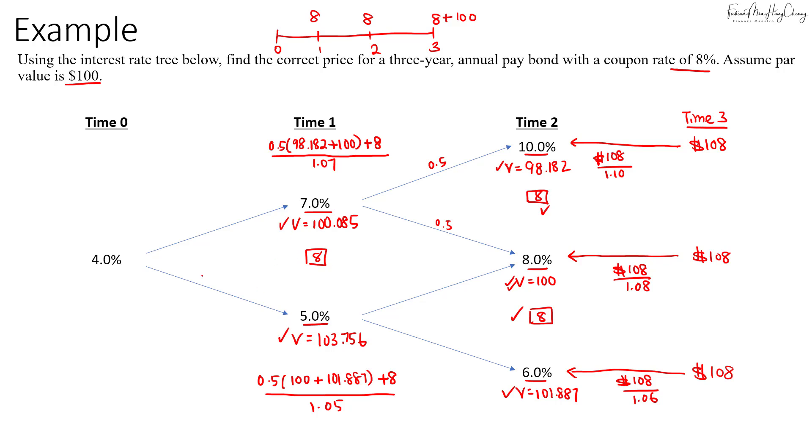And then lastly, we'll discount these two values back to the first period, time 0, where the discount rate is 4%. So the value at time 0 will be based on 0.5 times the sum of the two values, 100.085 plus 103.756, and then we plus the coupon, $8. Then we discount it at 4%, so that will give us 105.693.